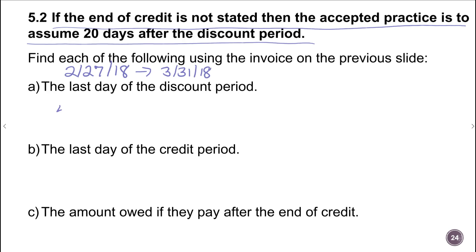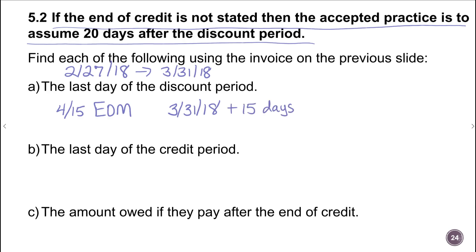On our invoice it said we would get a 4% discount if we pay within 15 days, and then it said EOM. So we're going to add 15 days to 3/31, and that's going to give us our end of discount. With the EOM, we add 15 days because we get that discount for 15 days after the end of month, and that would be 4/15/18.